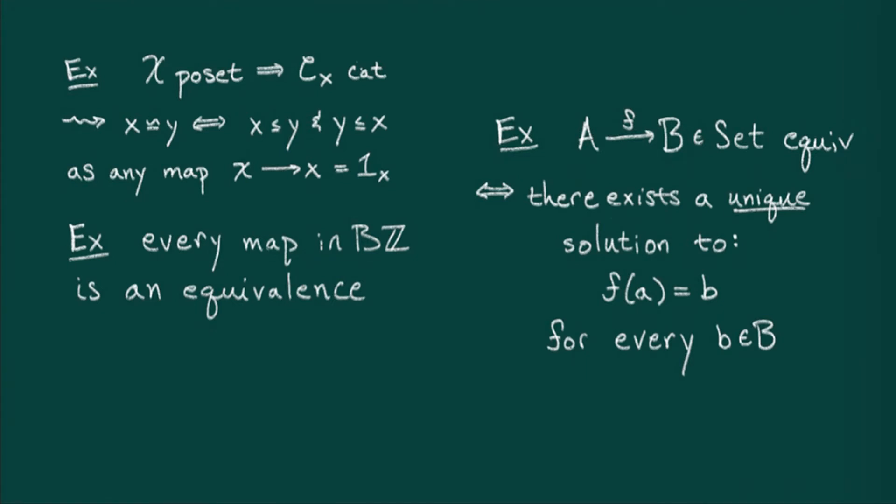Finally, in matrices, there's a nice non-trivial condition for when a map is an equivalence. Namely, a matrix is an equivalence if and only if n is equal to m, i.e. it's a square matrix, and its determinant does not equal zero.